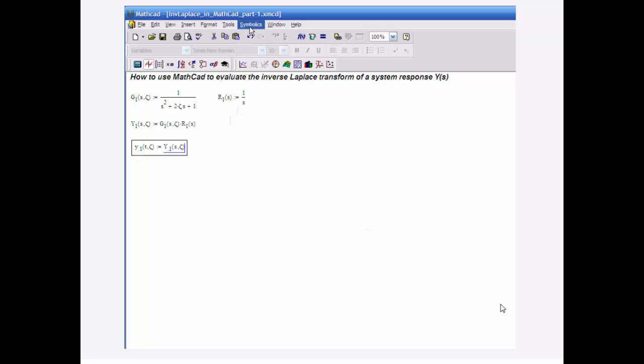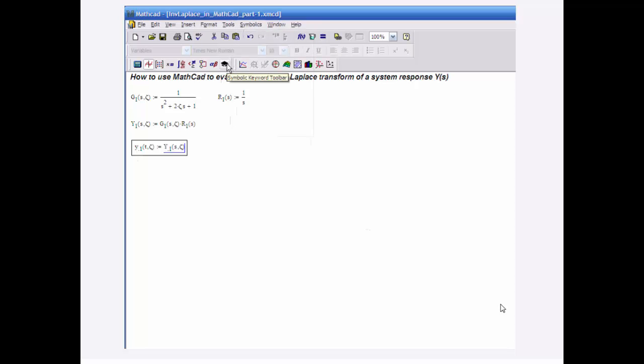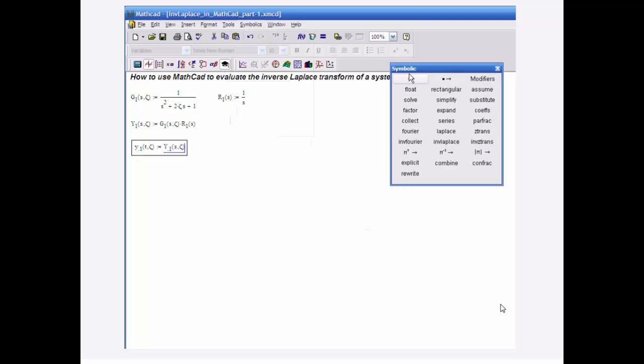And now you go to the symbolic keyword toolbar. There are two ways to access symbolic functions. One is the menu. So you see here we have inverse Laplace, but actually we can't use it in this context. The way we want to use it, we need to use the toolbar, which has the graduation hat, which is the way that all college students should approach this anyway, right? Because we're smart graduates.